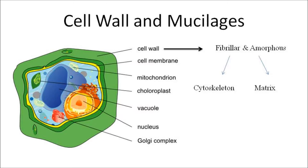Cell wall surrounds the cell membrane and provides protection and structural stability to the organism. Mucilage is a viscous secretion, usually of polysaccharide nature, with functions including preventing dehydration, helping with gliding motility, and holding colonies of algae together. The algal cell wall is made up of two components: the fibrillar component, which forms the skeleton of the wall, and the amorphous component, which forms a matrix within which the fibrillar component is embedded.